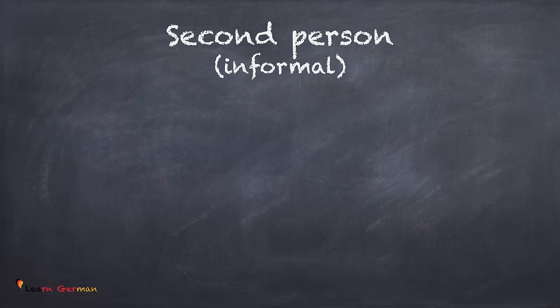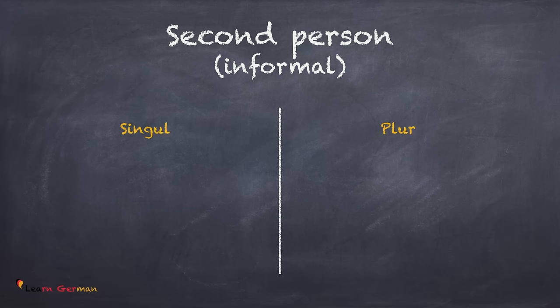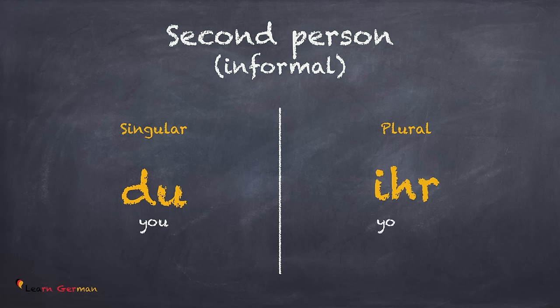Let's move to the personal pronouns in the second person. The situation with the second person you are talking to can either be informal or formal. Let's deal with the pronouns in the informal situation first. Once again, we have a singular and a plural form. If you are talking to a single person, you use du, and if you are talking to more than one person, you would use ihr.